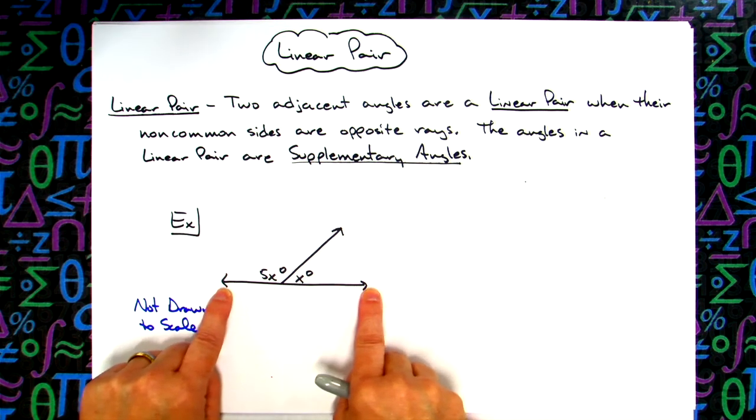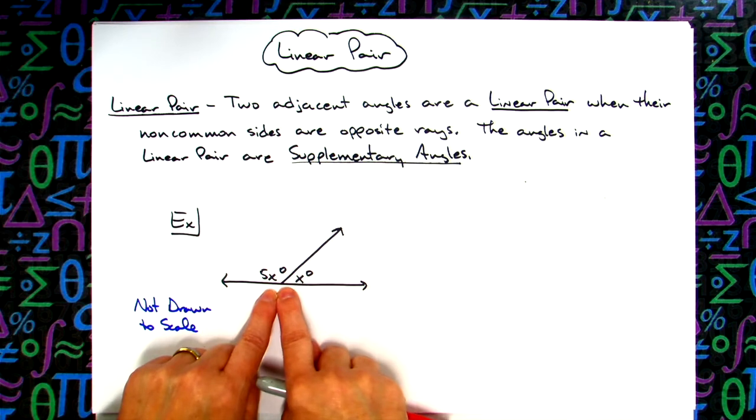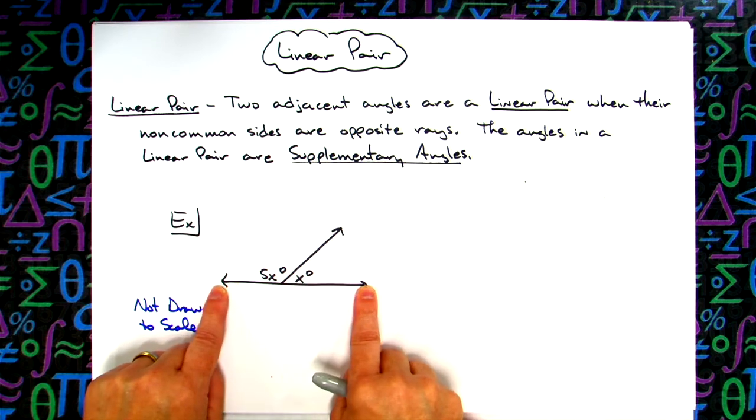When they are opposite rays, here's the vertex, they're going in opposite directions, and we know we have a linear pair.